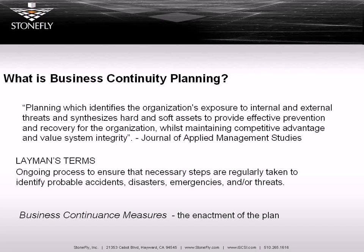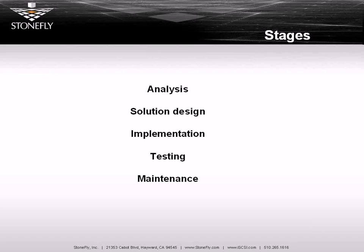It's an ongoing process to ensure that necessary steps are regularly taken to identify probable accidents, disasters, emergencies, and or threats. Even simpler: business continuity is an individual plan catered around your business requirements to ensure that data is available — maybe not all of the data, maybe only your payroll or only your accounting system, or it might encompass all factions of your data processing: accounting, MRP, Word documents, SharePoint. That's a business decision you're going to have to make as part of the continuity plan.